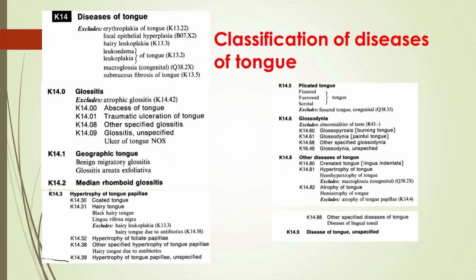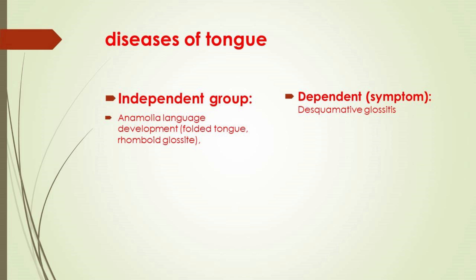Other tongue conditions include plicated tongue (fissured, furrowed, or scrotal tongue), glossodynia (burning tongue, painful tongue), crinated tongue, hemiatrophy of tongue, and macroglossia. Atrophy of tongue papillae and other specified tongue diseases include lingual tonsil disease. Independent tongue group conditions include rhomboid glossitis and various injuries — chemical, mechanical, physical — as well as symptomatic desquamative glossitis and black hairy tongue in infectious diseases such as candidiasis and syphilis.